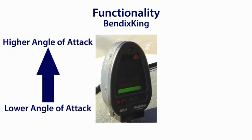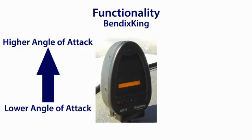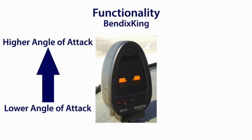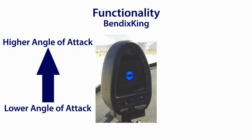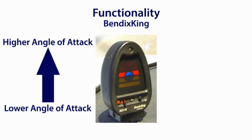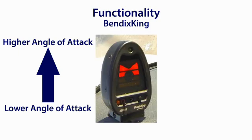The Bendix King device features an on-speed donut and a stall warning arrow indicating that the angle of attack must be reduced. It gives a verbal warning indicating that the pilot must take action to correct the AOA, and provides advanced warning when the aircraft is approaching stall — usually in advance of the installed stall system — giving the pilot advanced warning for stall avoidance.